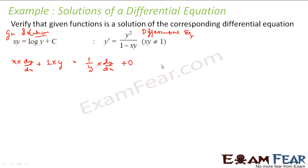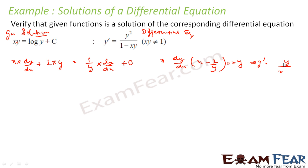And the constant becomes 0. So, what I get is dy/dx × (x − 1/y) = y, or dy/dx = y ÷ (x − 1/y). Working this out, it becomes −y ÷ (xy − 1/y), which gives dy/dx = −y² ÷ (xy − 1). Rearranging with the negative sign, dy/dx = y² / (1 − xy).